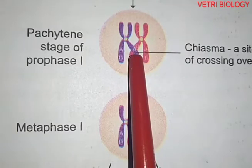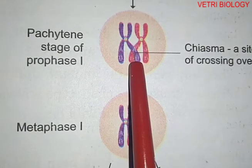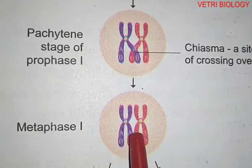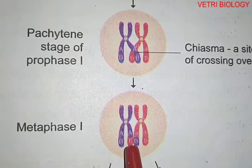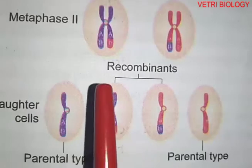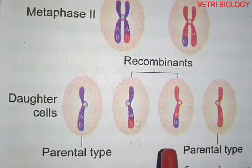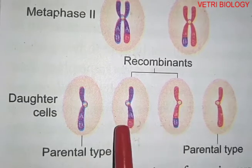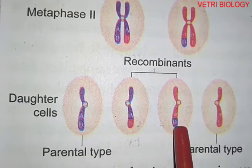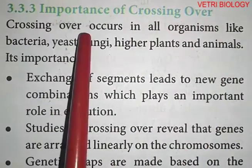In terminalization, the chiasma moves to the terminal end of the chromatids. As a result, the two homologous chromosomes completely separate. The chromatids that underwent crossing over now carry new combinations of genes — these are called recombinants — while the unchanged ones are called parental types.